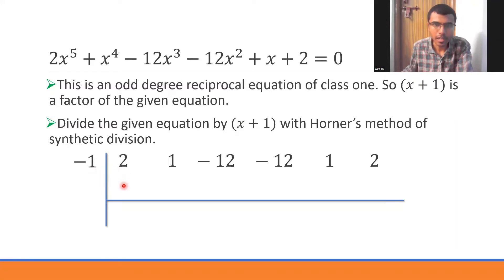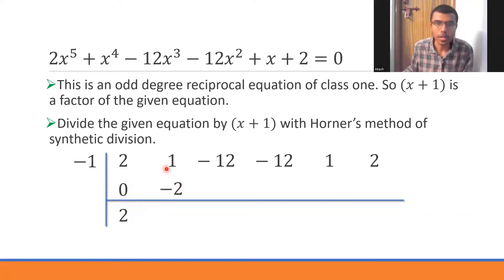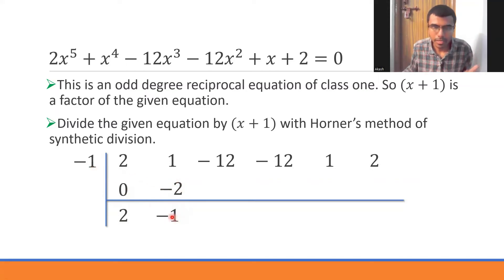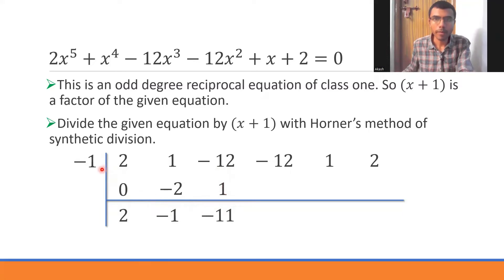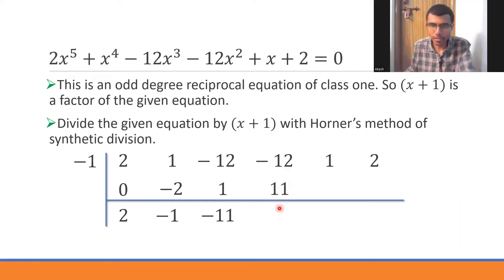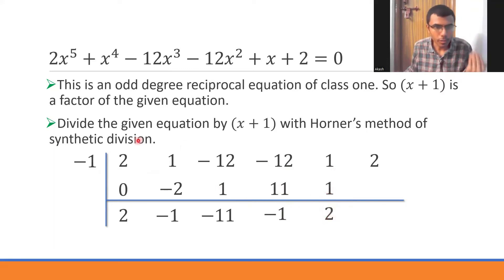Place 0 initially, so 2 + 0 = 2. Now cross-multiply each step: 2 × (-1) = -2; place it under 1, giving 1 + (-2) = -1. Then -1 × (-1) = 1; place under -12, giving -12 + 1 = -11. Then -11 × (-1) = 11; place under -12, giving -12 + 11 = -1. Then -1 × (-1) = 1; 1 + 1 = 2. Then 2 × (-1) = -2, and ultimately we get 0 — confirming x+1 is a factor.